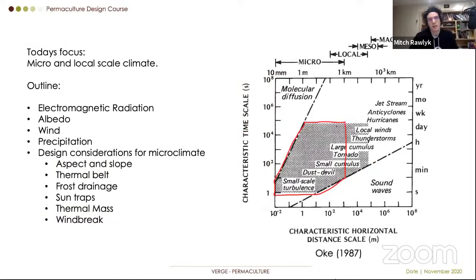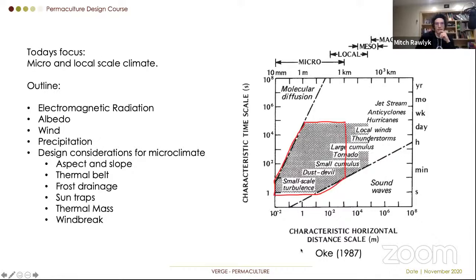Today's focus is going to be on micro and local scale climate processes. We're going to go over electromagnetic radiation, albedo, wind, a little bit of precipitation, and the design considerations for microclimate. This diagram on the right shows the distance scale on the bottom axis and temporal scale on the vertical axis. We're going to be focusing on areas less than a kilometer and processes in the temporal scale of about a day.